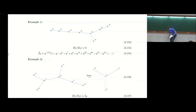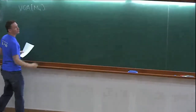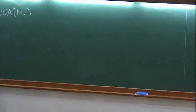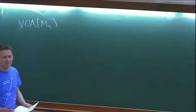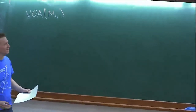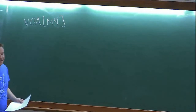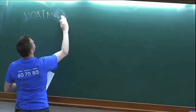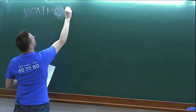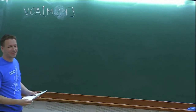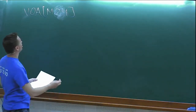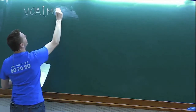So the title is VOA of M4. Funny story: I recently gave a talk on this subject at a different conference, and I sent my title by email as 'VOA of M4,' but when I arrived at the conference I saw 'VOA of M24.' M24 already has a well-established career in vertex algebras, but anyway, it's not VOA of M24 — it's VOA of M4.